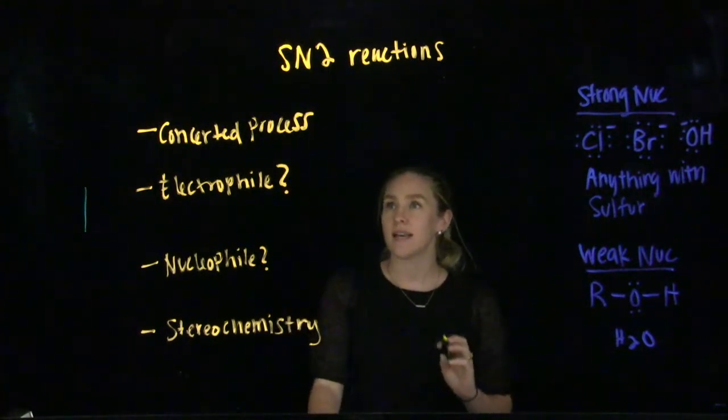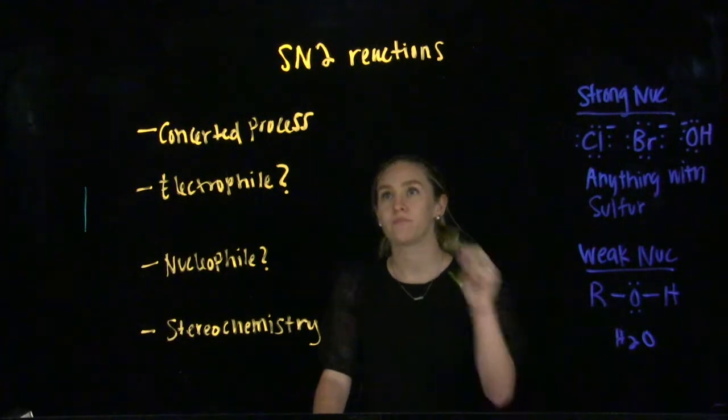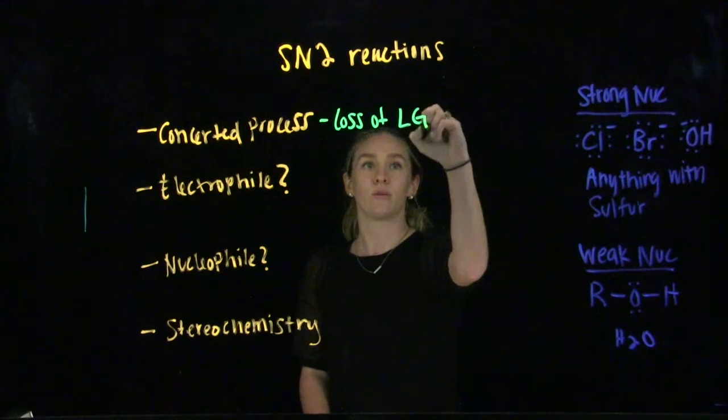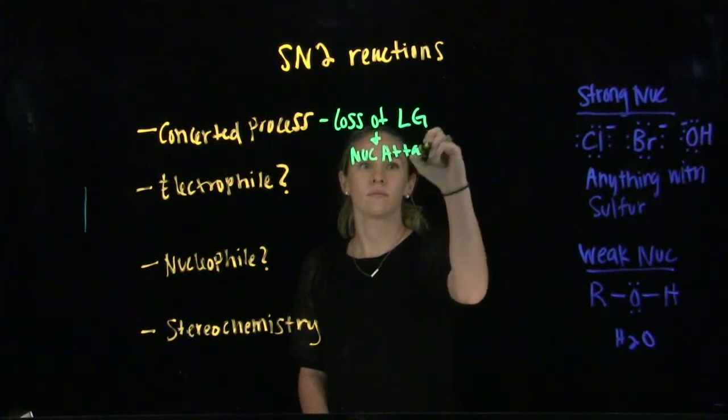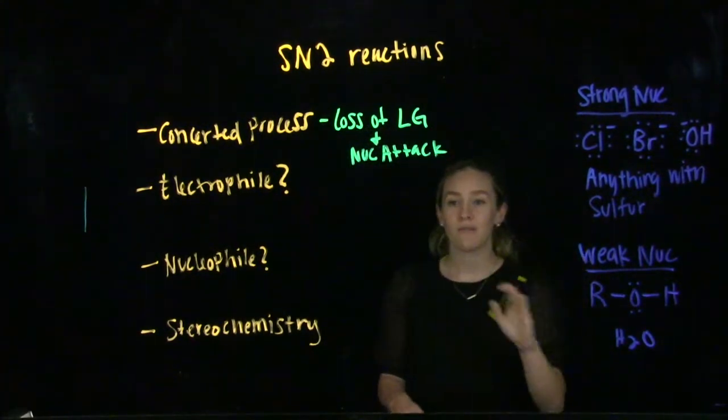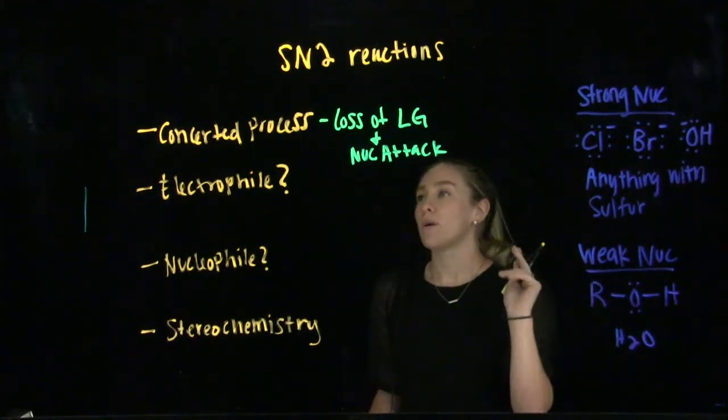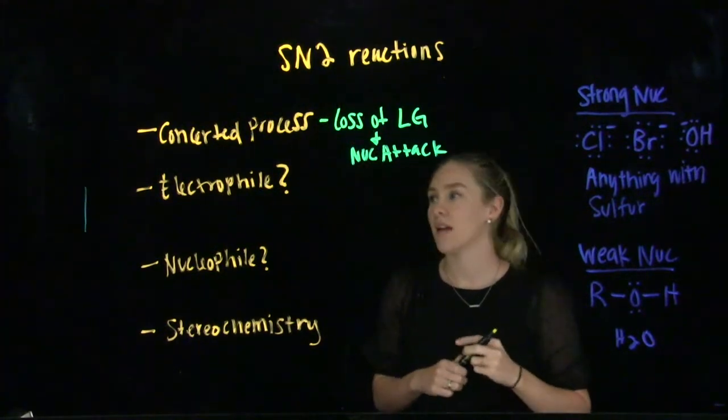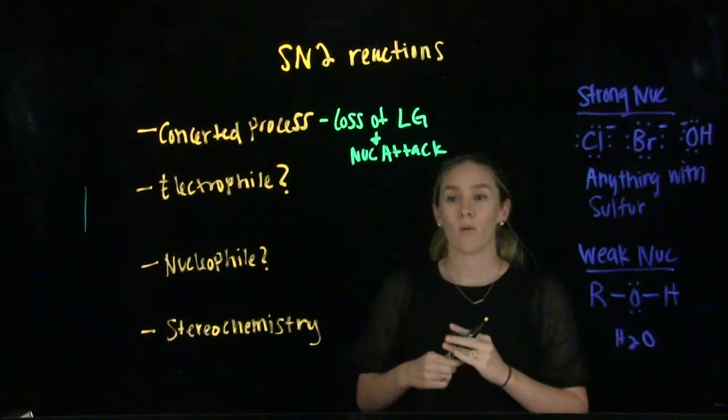What this means is that our two main processes that happen in every single substitution reaction, which is the loss of your leaving group and your nucleophilic attack, these both happen at the same time. As your nucleophile is attacking, that's kicking your leaving group out. So you're always going to have two arrows at the same time happening in an SN2 reaction. In our example, I'll show you more about what this means.